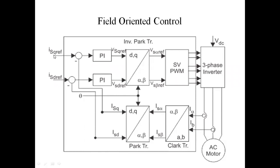These are the reference values — direct axis reference value and quadrature axis reference values. Here, IA, IB, and IC are the three-phase input reference currents connected to the Clark transformation inputs. Clark transformation outputs are IS alpha and IS beta — it converts ABC to alpha-beta. Next, Park transformation converts alpha-beta to DQ axis. This is Park transformation. This is Clark transformation.